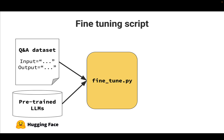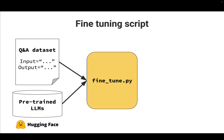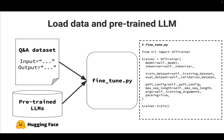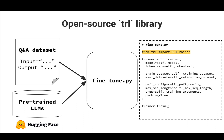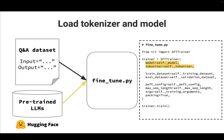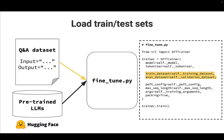Once you have these two key ingredients, you need to write what is called a fine-tuning script. This is basically a Python script that uses an open source library called TRL by Hugging Face. You import what is called a supervised fine-tuning trainer, and there you pass the model and the tokenizer — in this case, Falcon 7 billion and its corresponding tokenizer. You also pass the training and evaluation dataset. Training data is used to adjust model parameters, and the evaluation dataset is used to make sure that the model gets better over time.